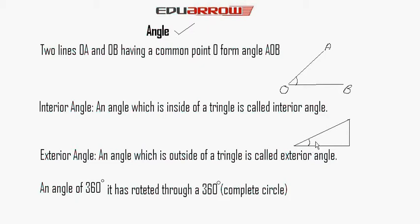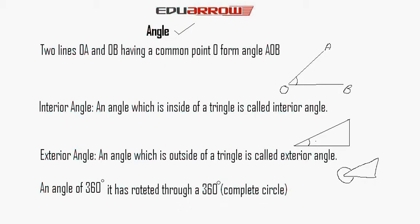An exterior angle is an angle which is outside of a triangle. This is a triangle and the outside angle — this one — is called the exterior angle. An angle of 360 degrees, where a line has rotated through 360 degrees, is called a complete angle, also called a complete circle.